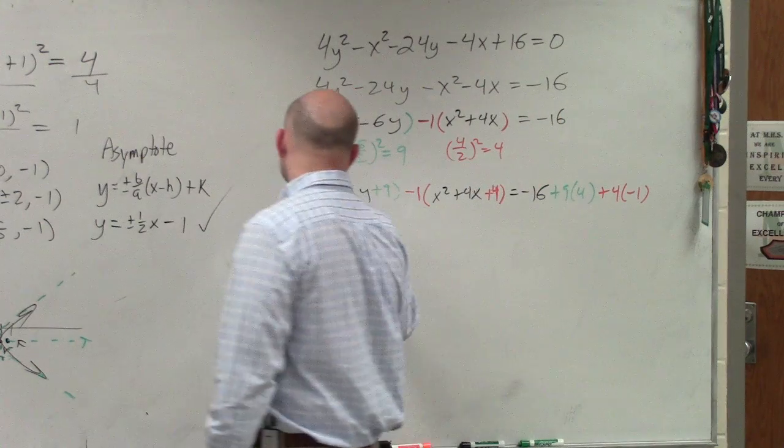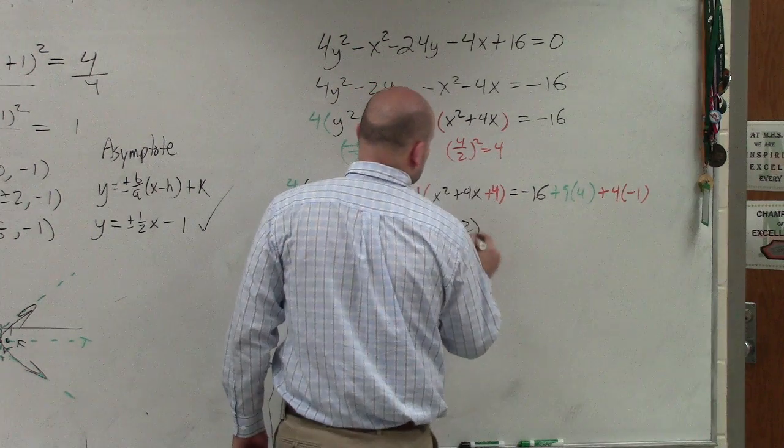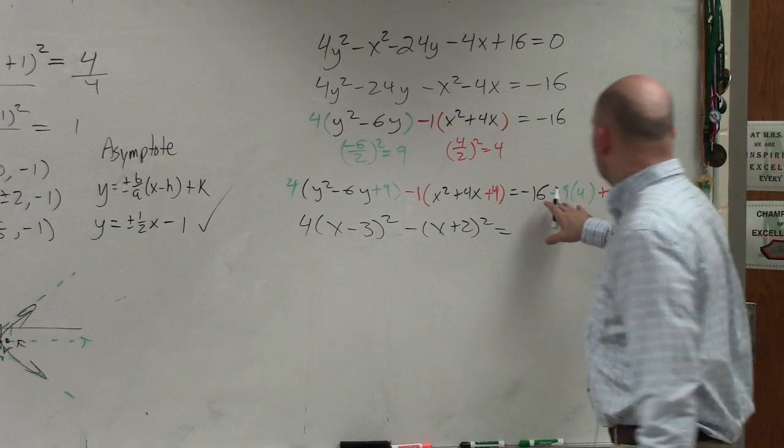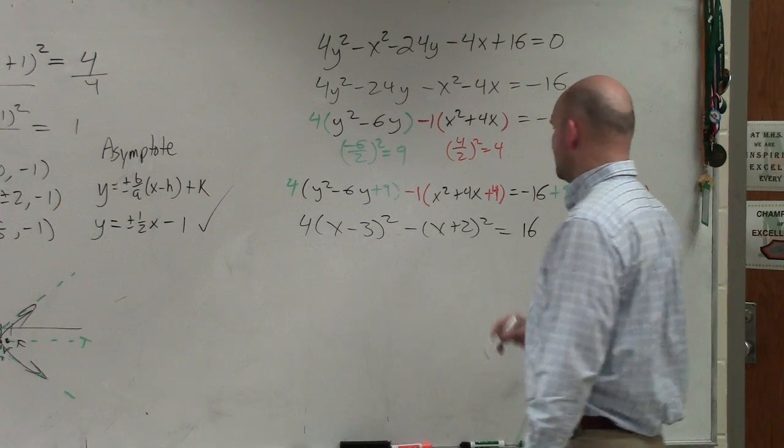So now I'll go back to one single color and we'll group this down. So that's 4(y - 3)² - (x + 2)² equals, let's see, that's 36 - 3, so that's 20 - 4, so that's equal to positive 16.